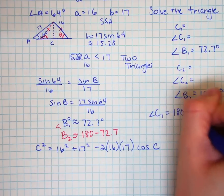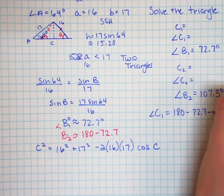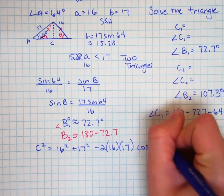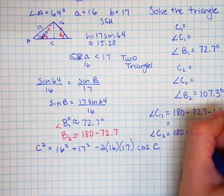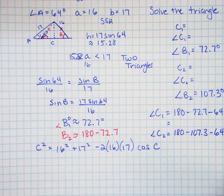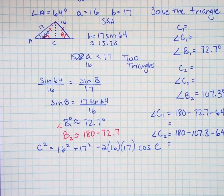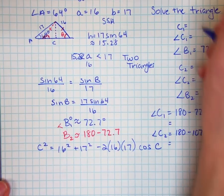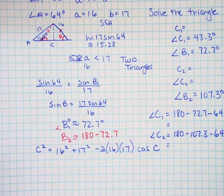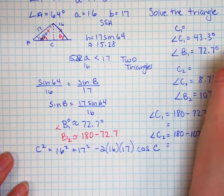And to do that, I'll take 180 minus 72.7 minus 64. Well, I almost forgot to do that part. And C2, I'll do the 180 minus 107.3, this time again minus 64 degrees. So my two sides, C1, I'll end up with 43.3 degrees. And angle C2, I'll end up with 8.7 degrees.